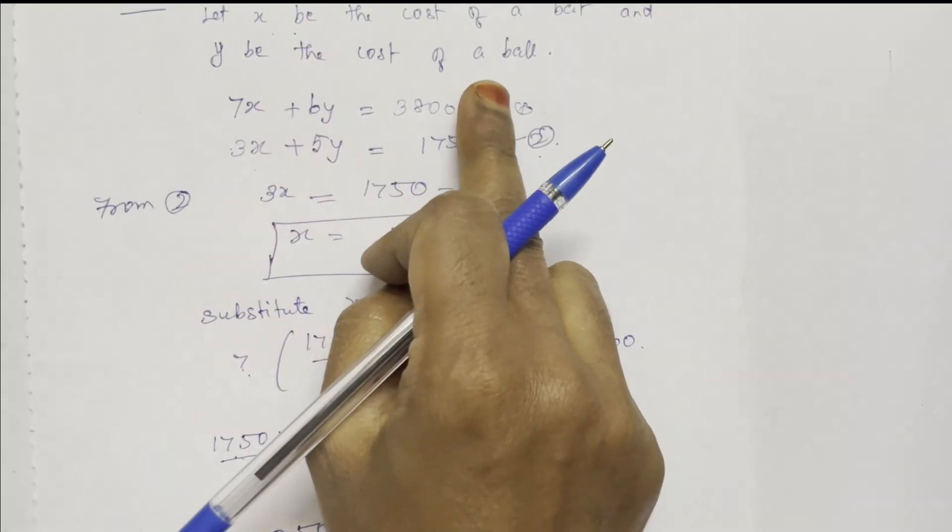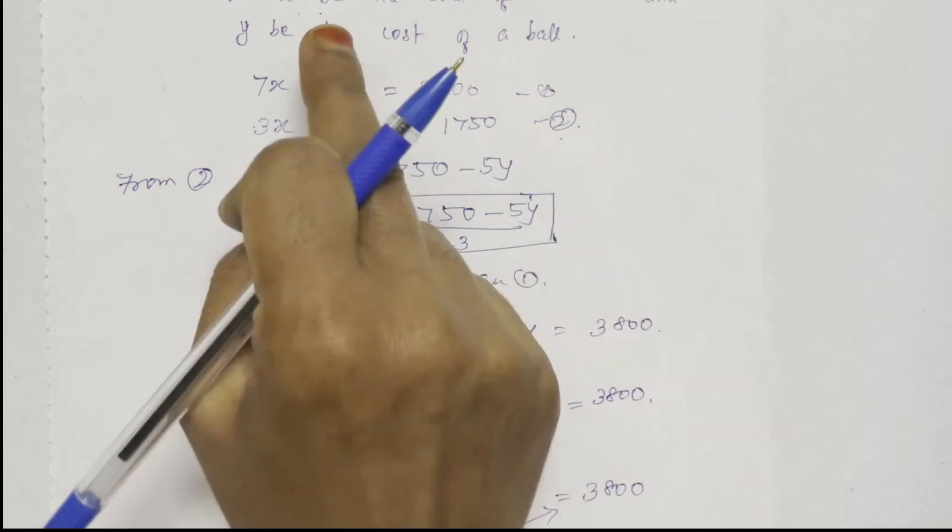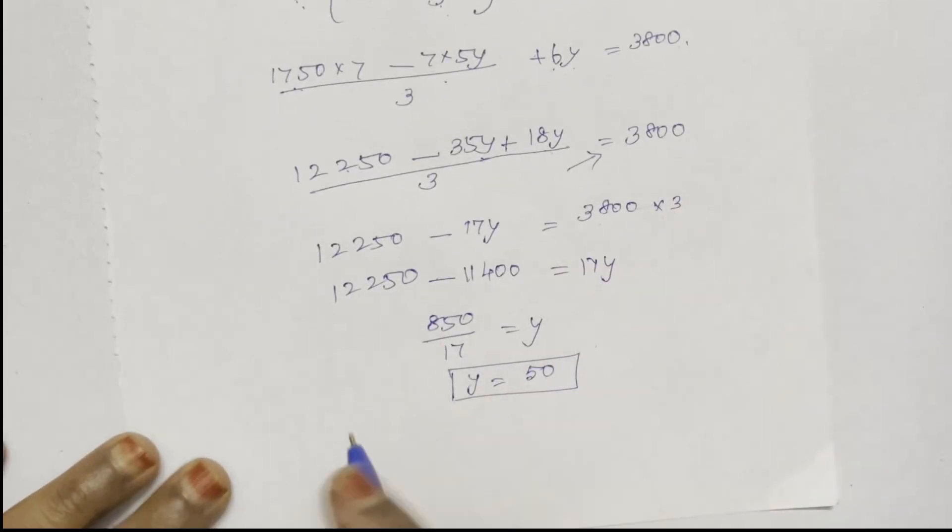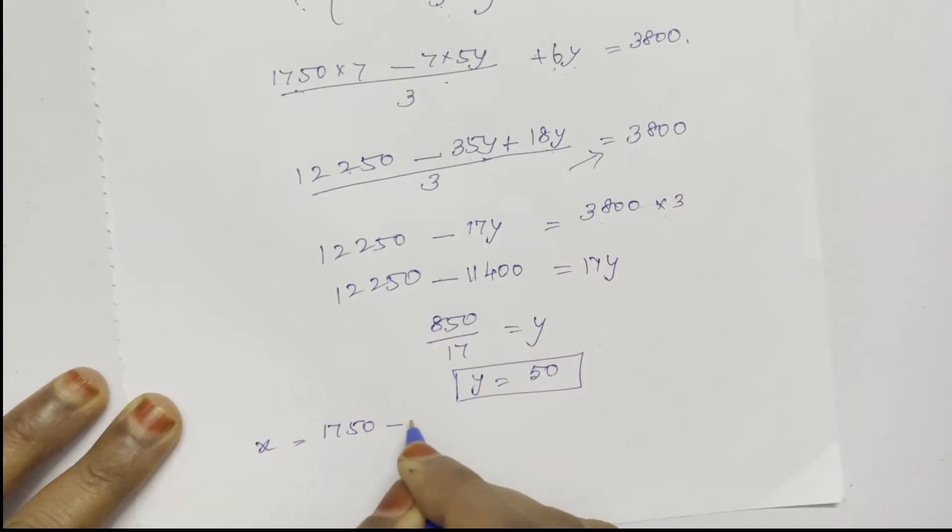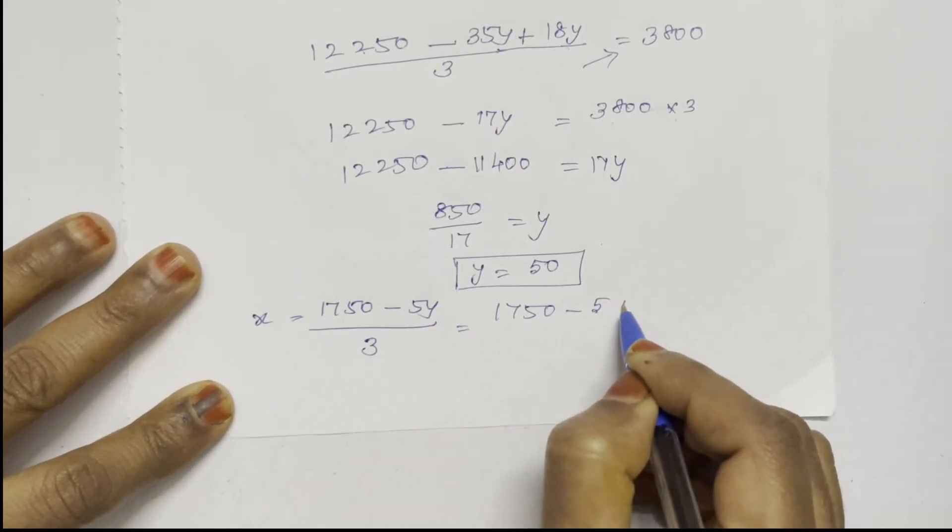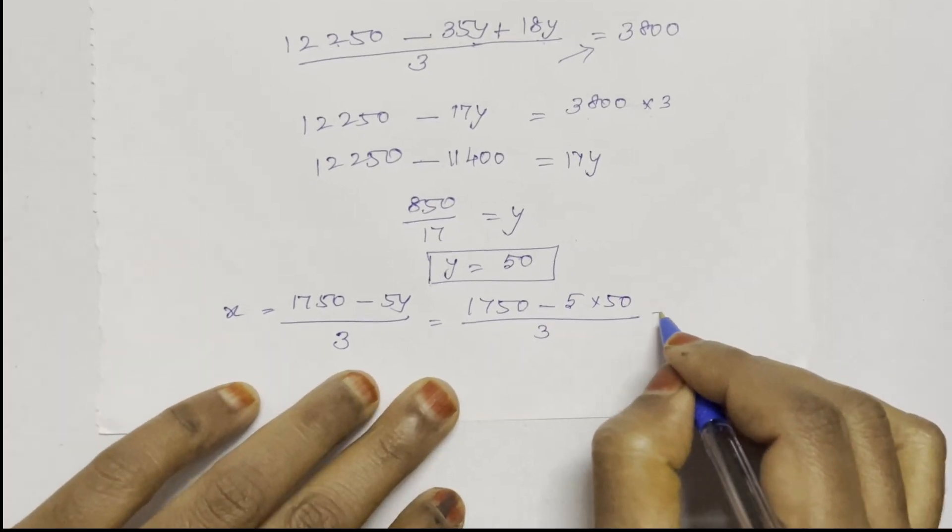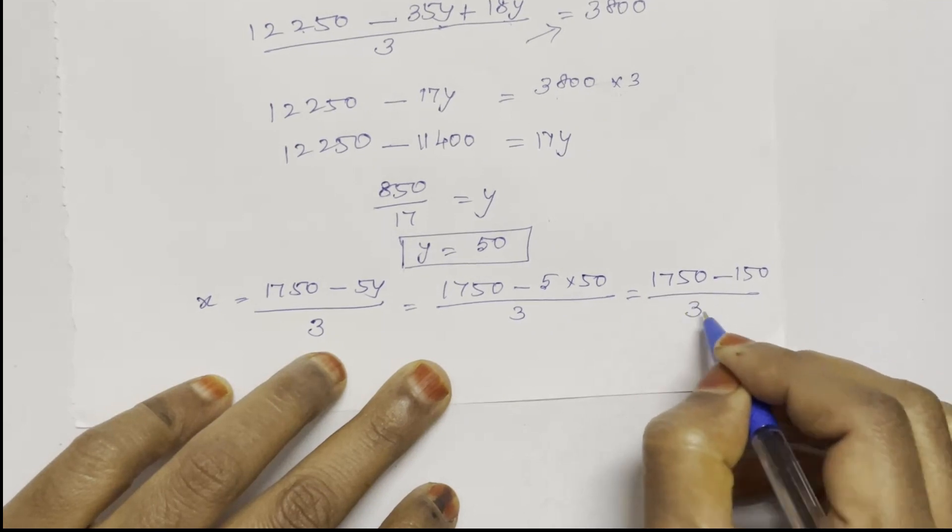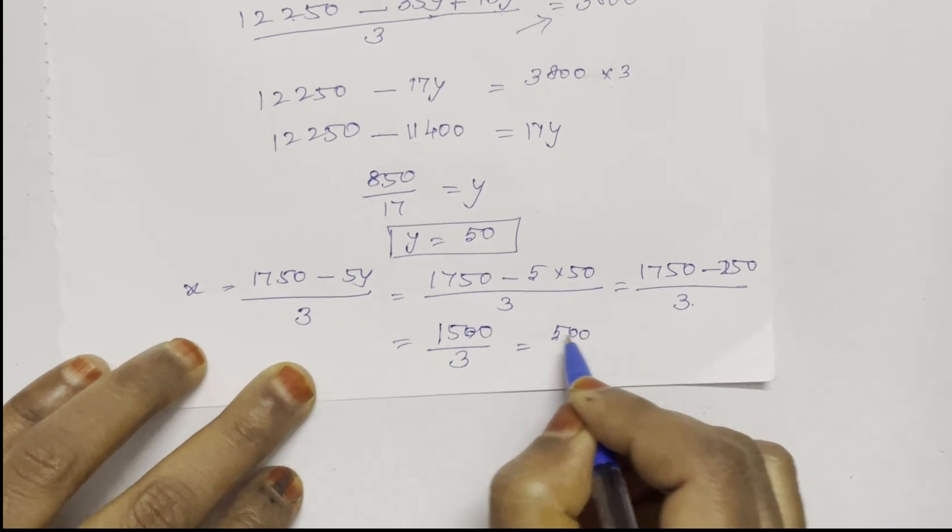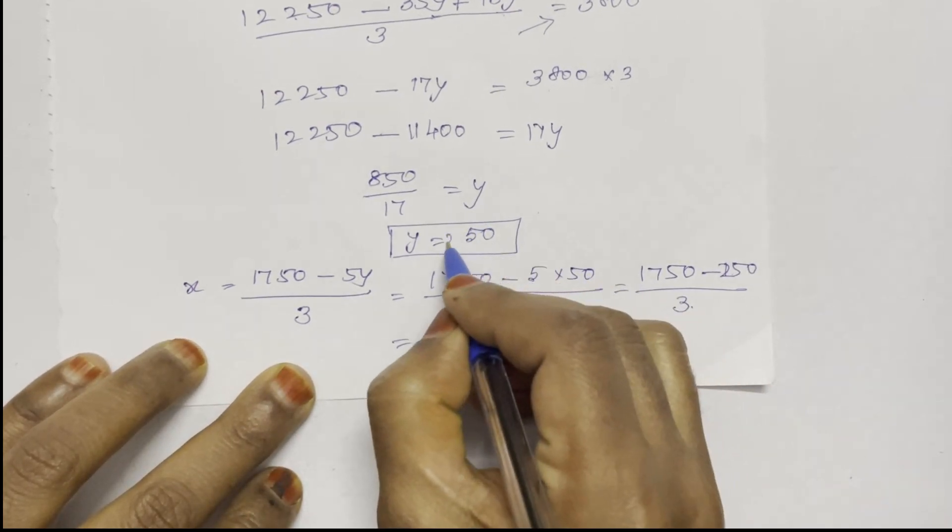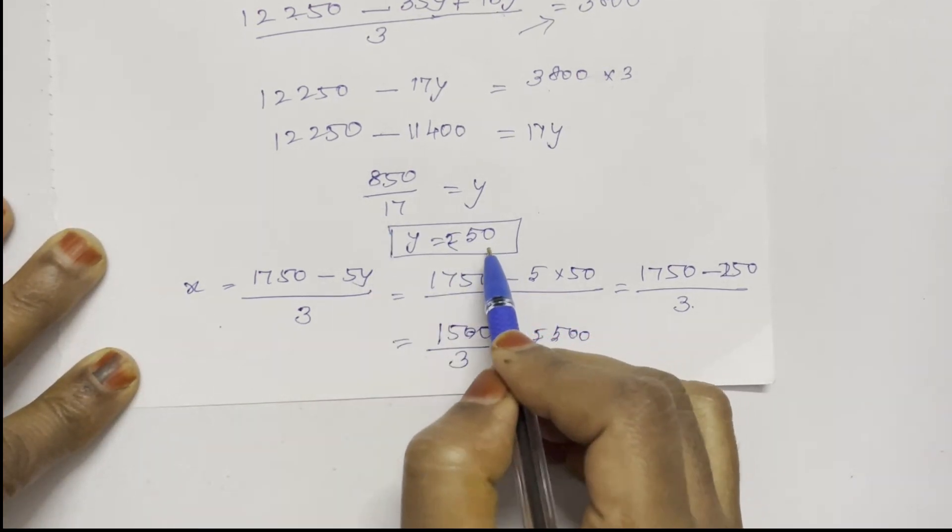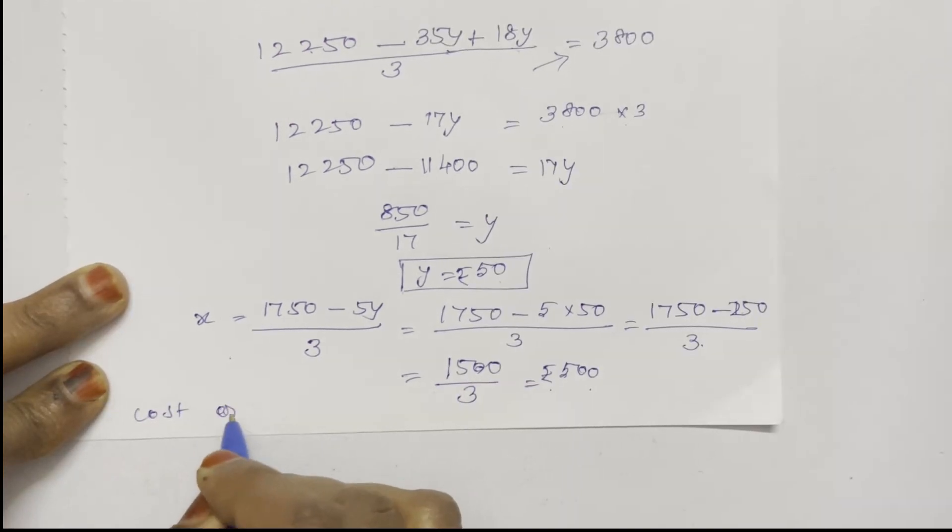Y is the cost of a ball, so the cost of a ball is Rs. 50. Now calculate the cost of the bat by substituting Y equals 50 into the equation. 1500 divided by 3 equals 500. So the cost of the bat is Rs. 500.